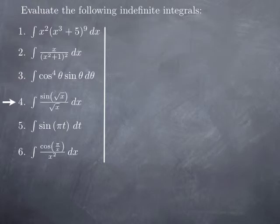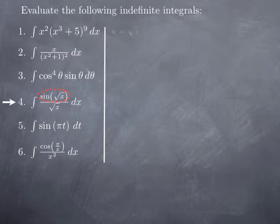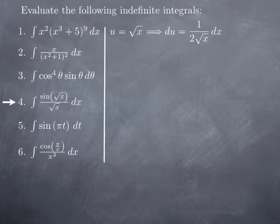For the fourth example, we have to integrate sine of square root of x divided by square root of x. The composite part is plugging the square root function into the sine function. So for u we naturally pick square root of x, and we immediately calculate du. Square root of x is x to the 1 half; when you differentiate, you get 1 half x to the negative 1 half, which I can write as 1 over 2 root x. Therefore, du is 1 over 2 root x dx.